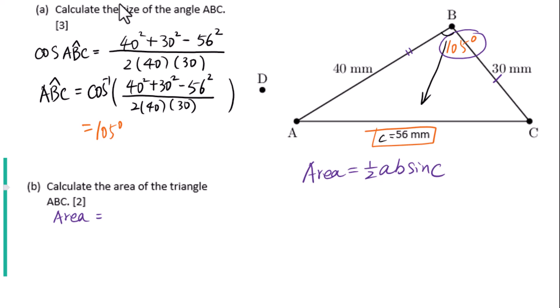Area of this triangle equals one-half. A is 40, B is 30, sin 105 degrees equals 580 millimeters squared.